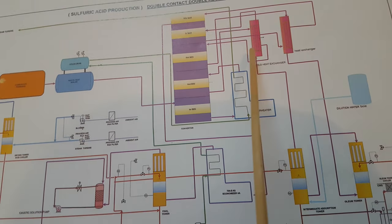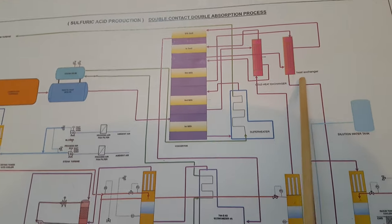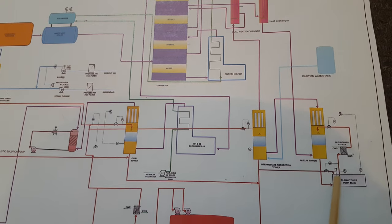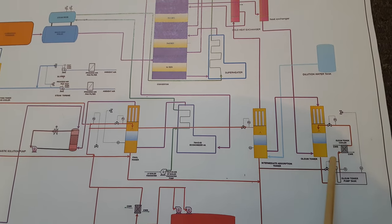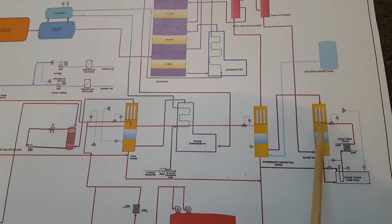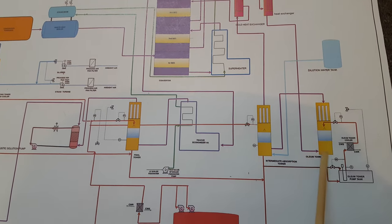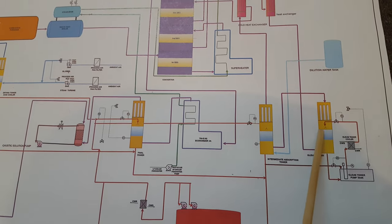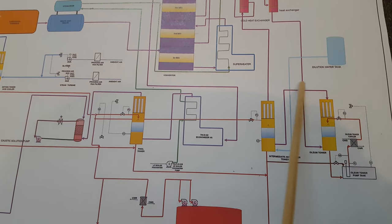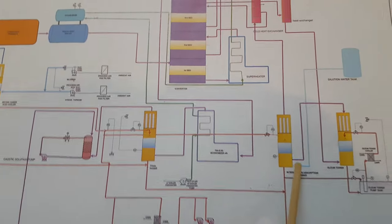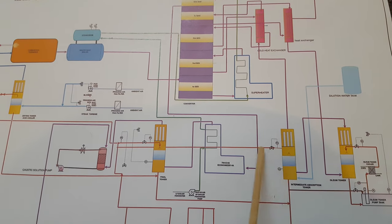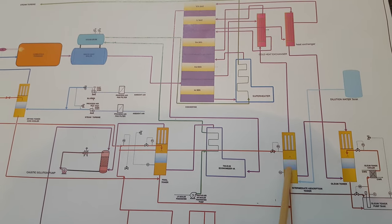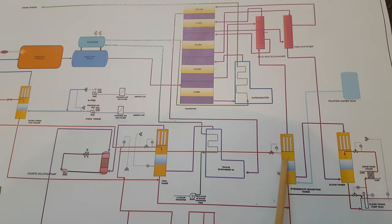After the third bed, gas goes to the heat exchanger. From the heat exchanger it comes to the oleum tower. From the bottom, oleum goes in, and this is the oleum pump tank which pumps and circulates the oleum to the oleum tower. From the top, oleum is sprayed and circulated; from the bottom, oleum goes out. Whatever sulfur trioxide gets absorbed in the oleum, the remaining gas goes from here to the intermediate absorption tower.